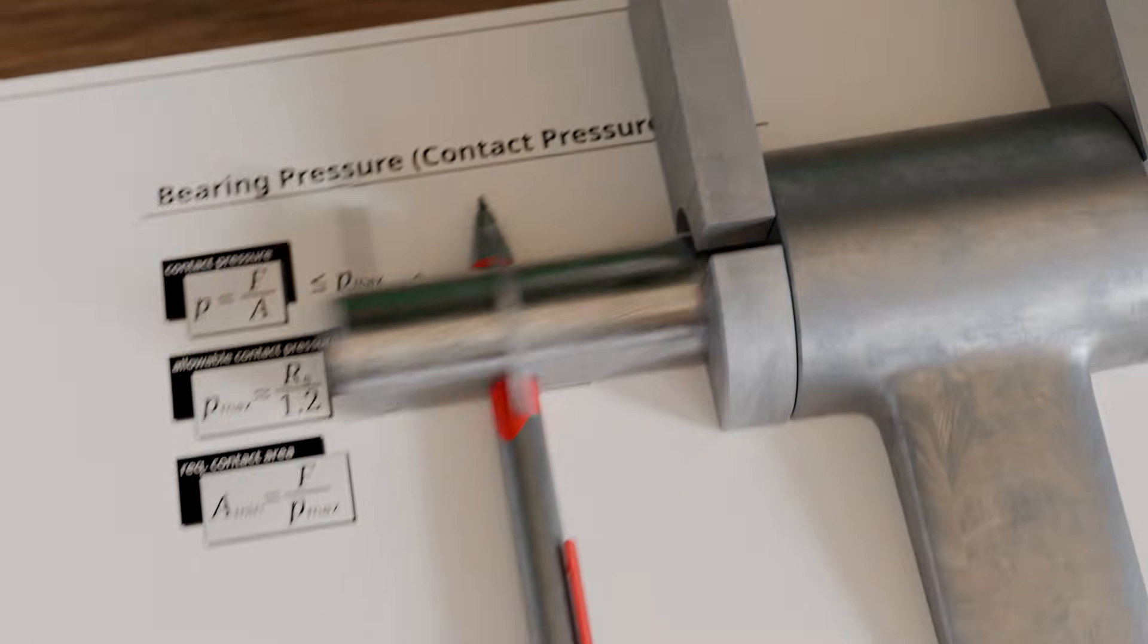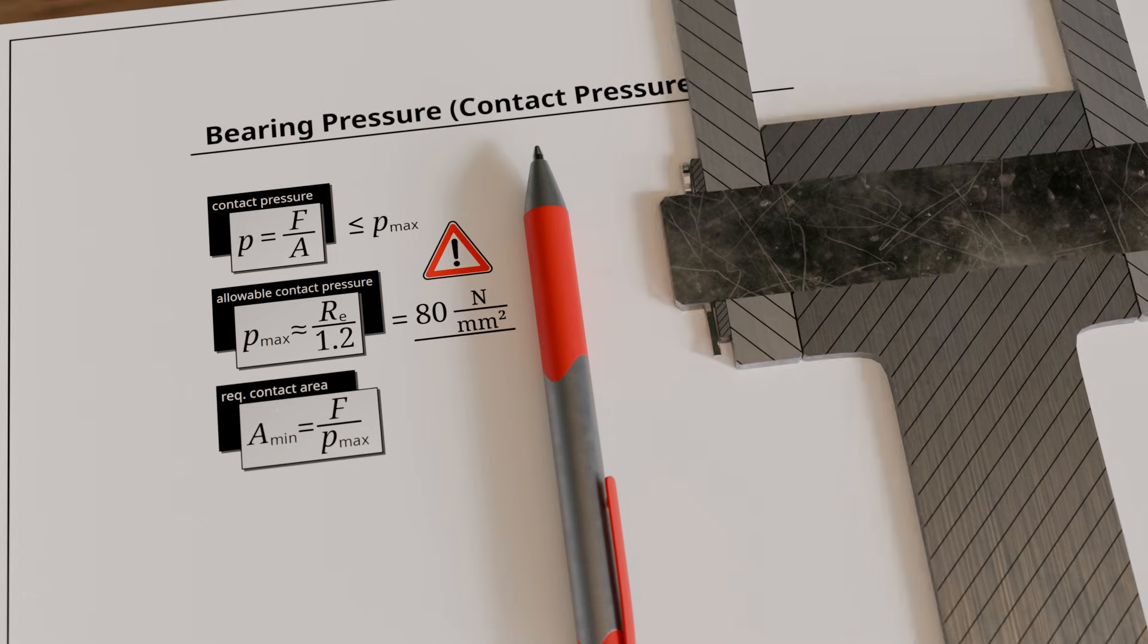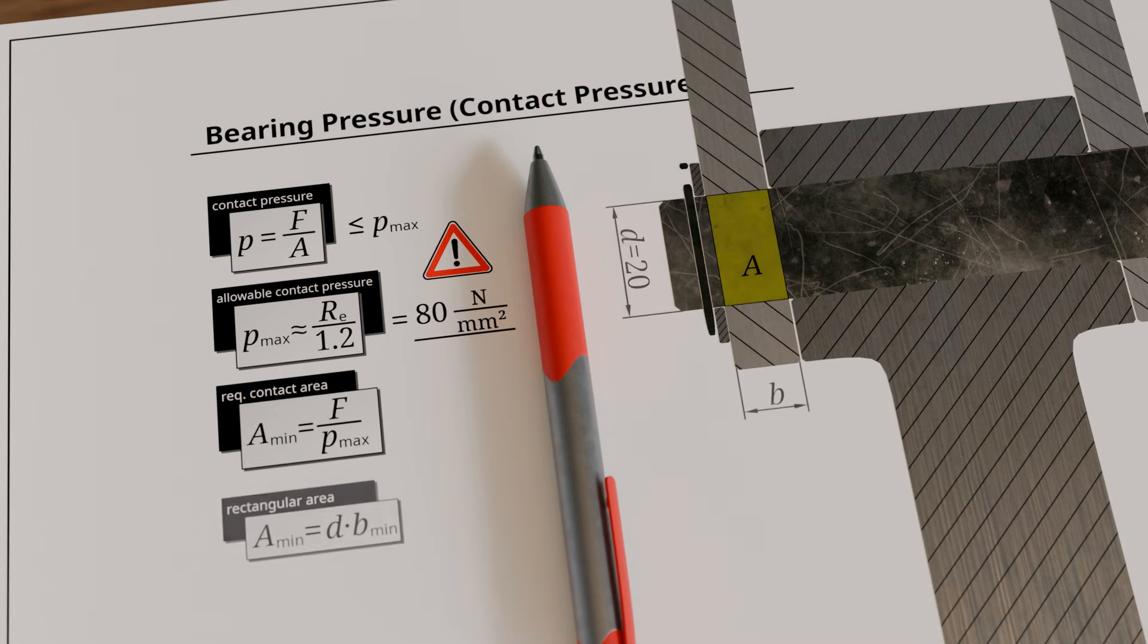Note that for clarity, the bearing surface is drawn into the plane of the sectional view in the illustration. In reality, the surface is projected downward.